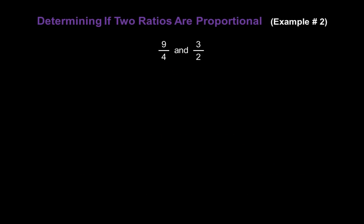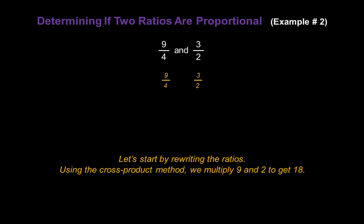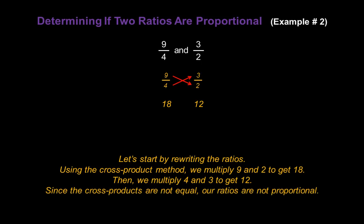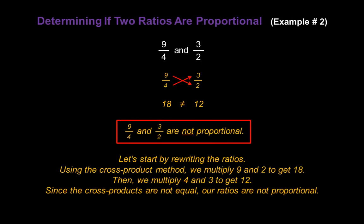Now let's check 9 over 4 and 3 over 2. Using the cross product method, we multiply 9 and 2 together, which gives us 18. We compare that with 4 times 3, which gives us 12. The cross products are not equal — 18 does not equal 12 — so the original ratios are not proportional. 9 over 4 and 3 over 2 are not proportional.